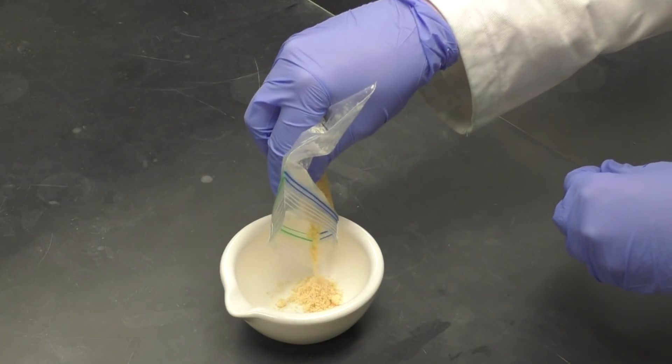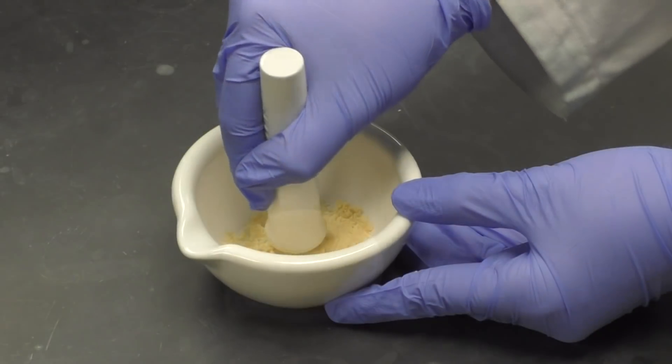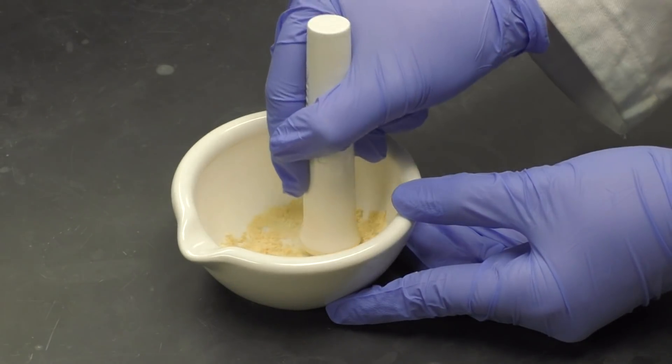Then, take a small portion of your food sample and place it into a mortar to be crushed further. Use the pestle to grind up the food sample into a fine powder.